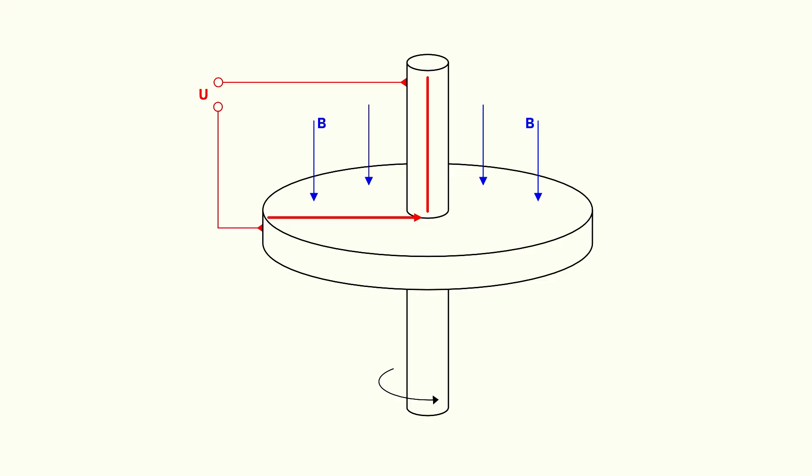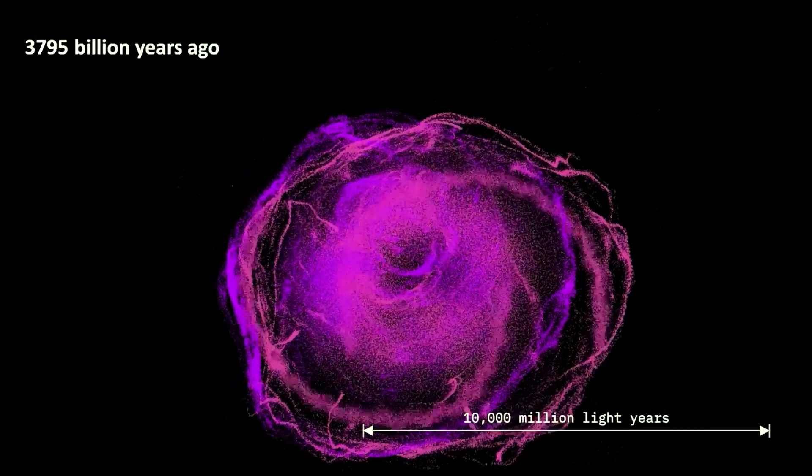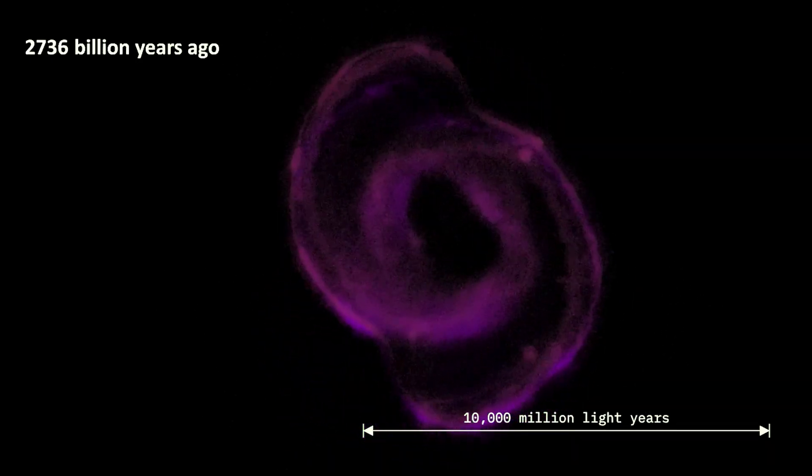As Faraday discovered 200 years ago, when a disk of conducting matter — either plasma or metal — rotates in a magnetic field, it produces currents that flow from the circumference of the disk to the center. So a new set of currents and filaments arose on a smaller scale as these giant disks rotated in the field of the magnetic vortex.